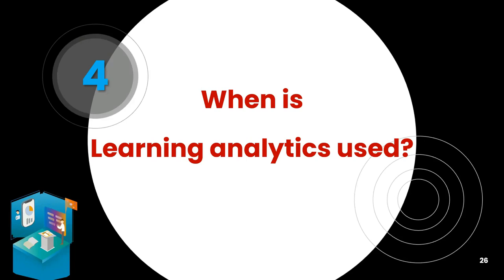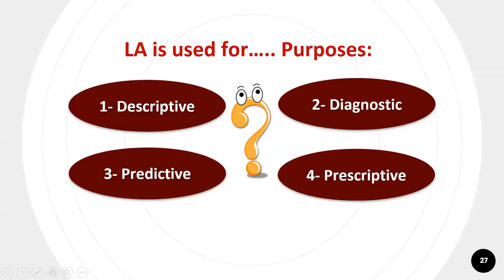The next question is: when is learning analytics used? The answer is all four purposes: descriptive, diagnostic, predictive, and prescriptive. According to a diagram generated by the Gartner Institute, these four levels represent the levels of learning analytics. As we move from descriptive to diagnostic, predictive, and finally prescriptive techniques, both the value and the difficulty increase. The audience was asked to choose their answer in the chat box, and those who answered 'all four' were correct.